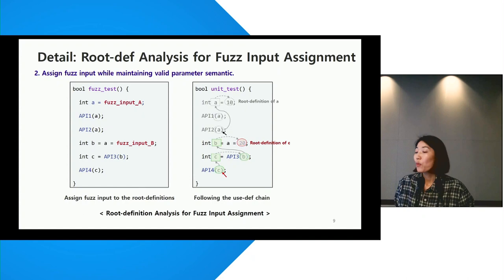By assigning fuzzing input at only root definitions, we can preserve the original data flow and naturally adhere to the existing inter-API semantics. For that, we performed use-def chain analysis in reverse order, starting from the last API call at the end of test function.